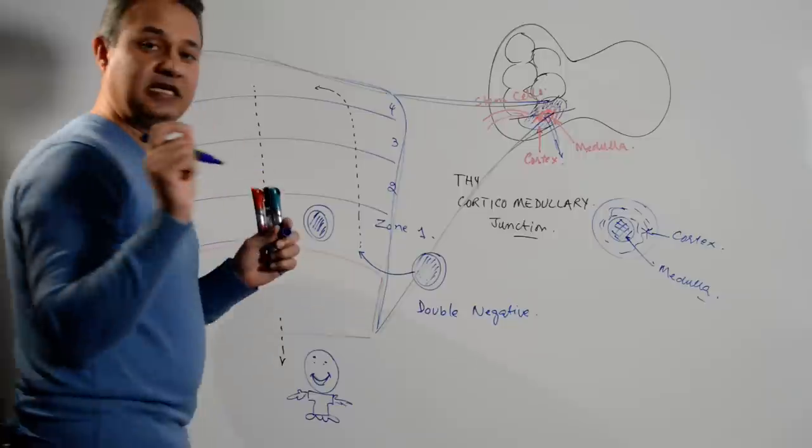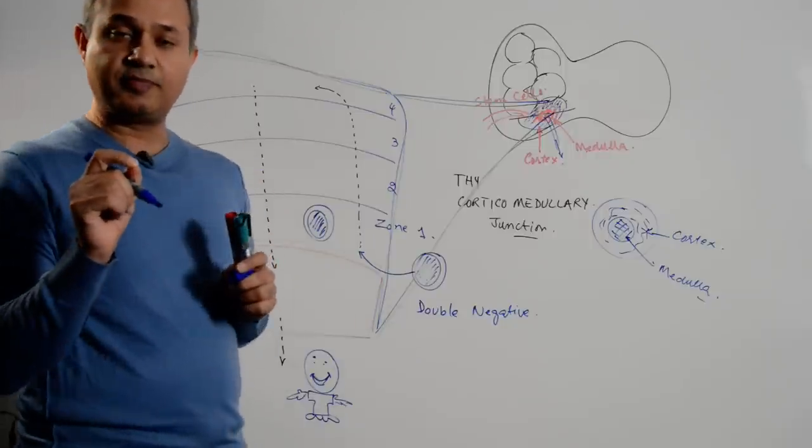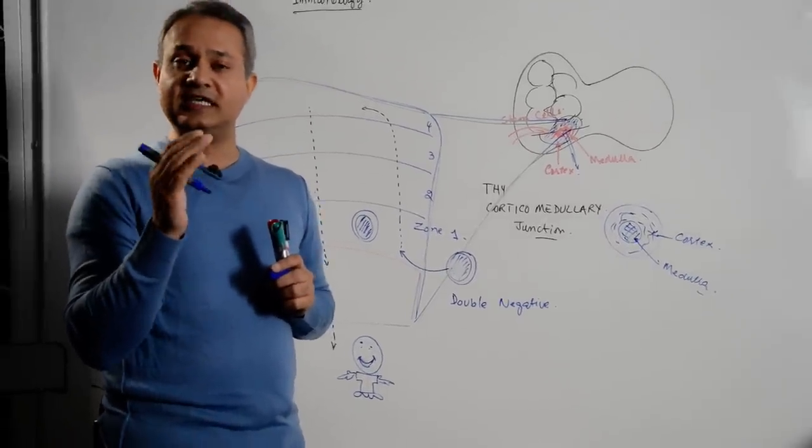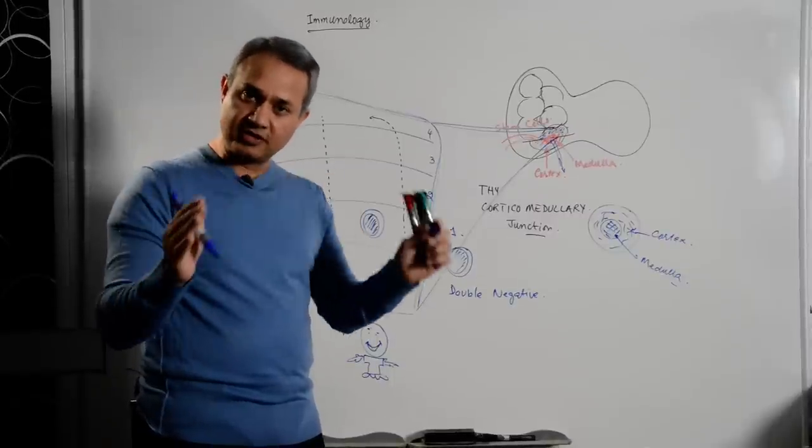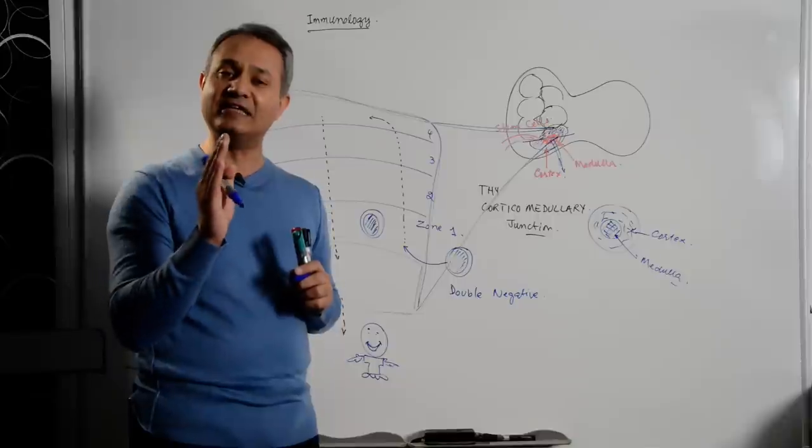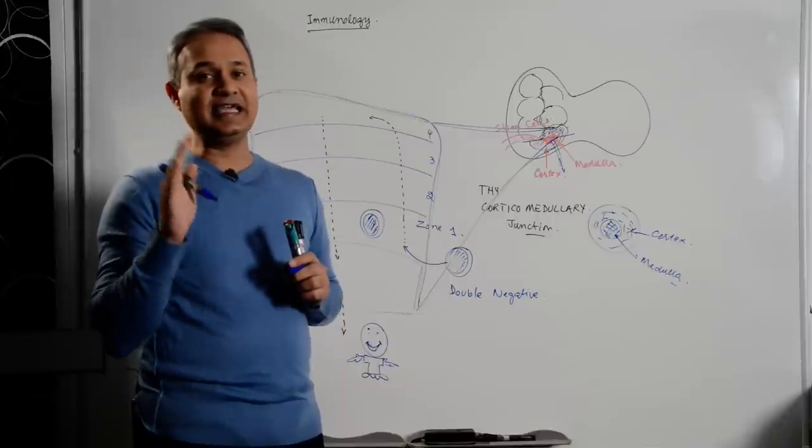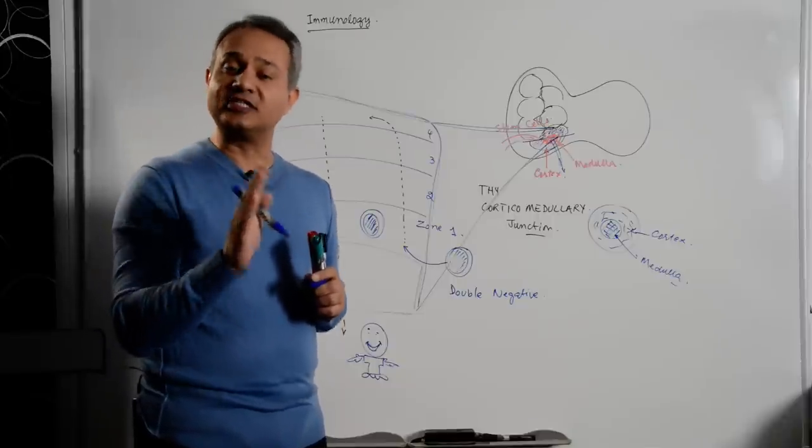The T lymphocytes are primarily of two types. CD4 helper T cells, which have further subclassifications, but they're CD4 types. And CD8 cytotoxic T cells.